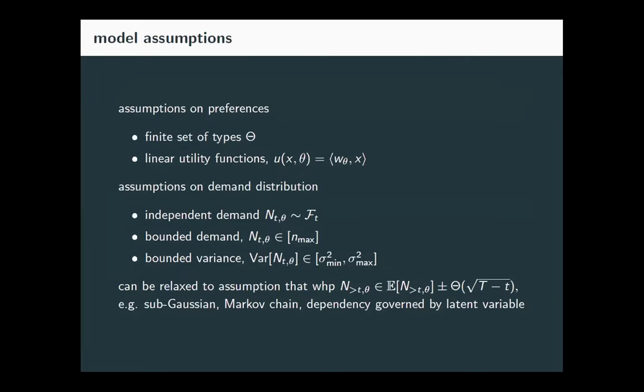We show results under a few simplifying assumptions: finite types and linear utility functions, and we need distributional information on the demand. We assume demand is independent at every time with bounded demand and bounded variance — it's important that variance is bounded away from zero so the stochasticity is meaningful. The key point is we need to construct confidence sets for our demand, and here these confidence sets scale with root T.